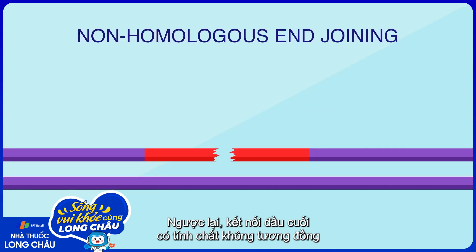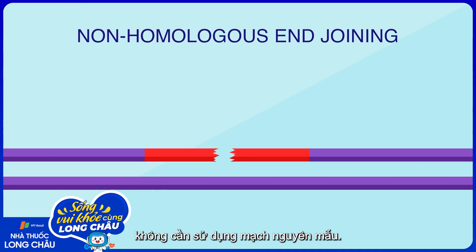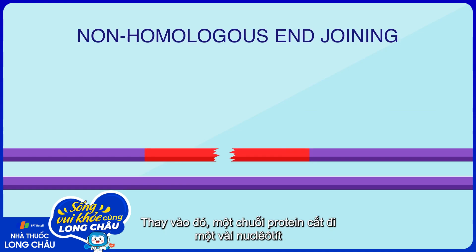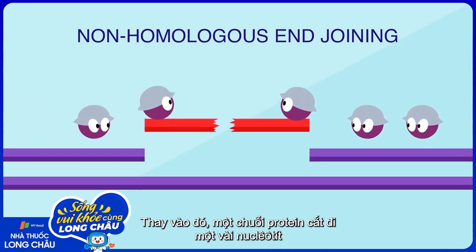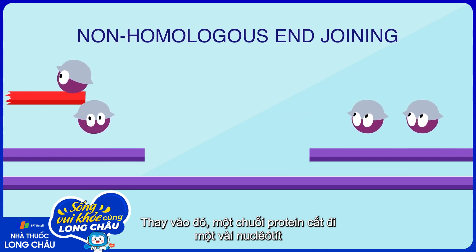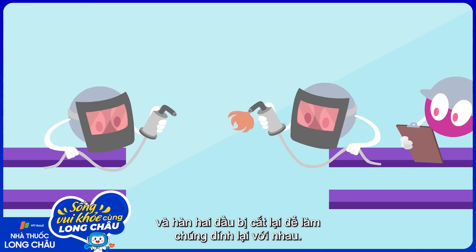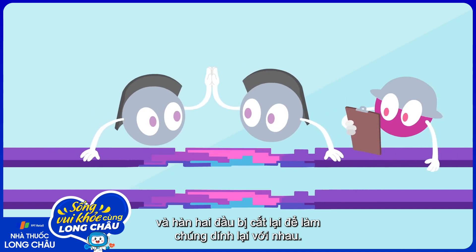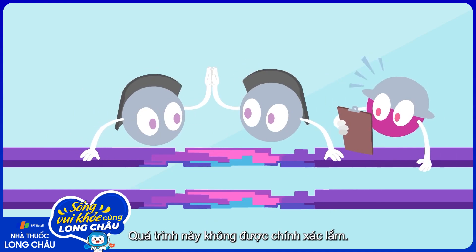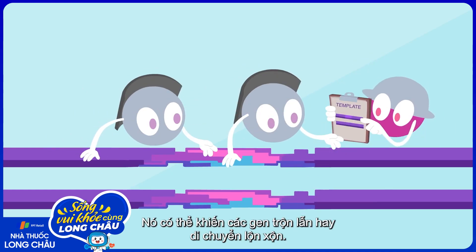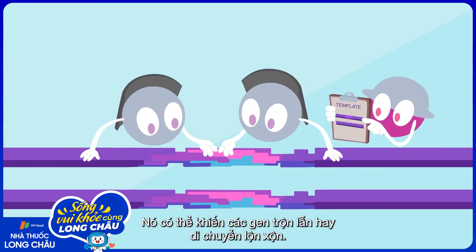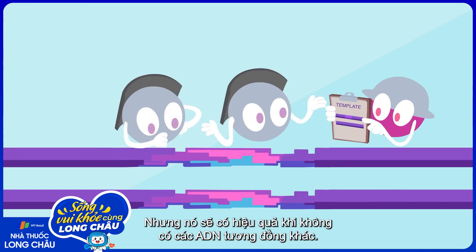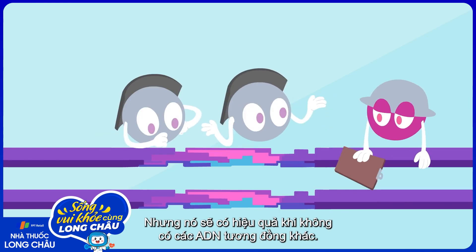Non-homologous end joining, on the other hand, doesn't rely on a template. Instead, a series of proteins trims off a few nucleotides and then fuses the broken ends back together. This process isn't as accurate — it can cause genes to get mixed up or moved around. But it's useful when sister DNA isn't available.